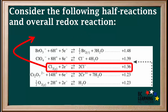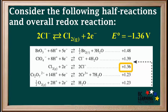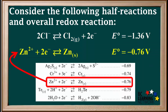We'll start with the half-reaction we get by reversing the reduction of chlorine on the table to get the oxidation of chloride ions. Notice because we reversed the equation, the sign on the E0 is switched from positive to negative. Next, we'll add the half-reaction for the reduction of zinc ions, the way it is on the table, with an E0 value of negative 0.76 volts.